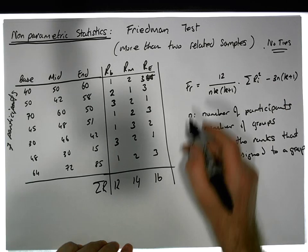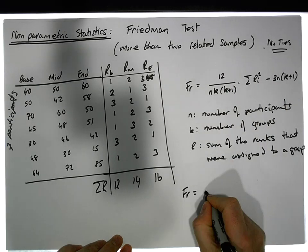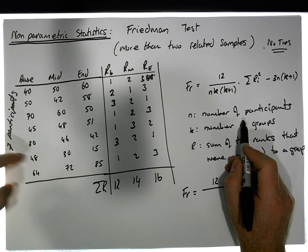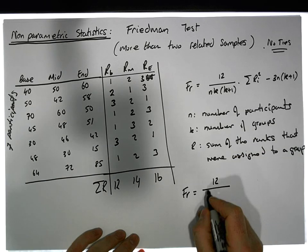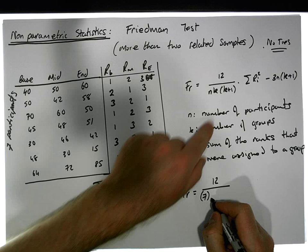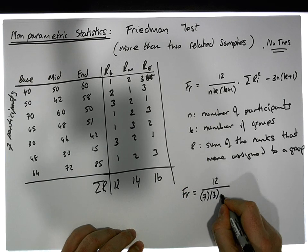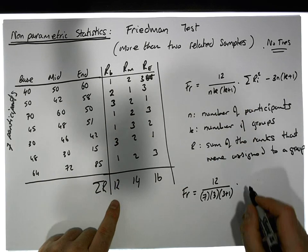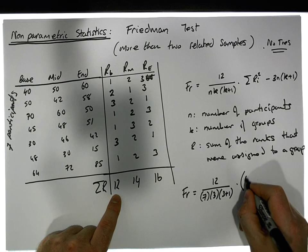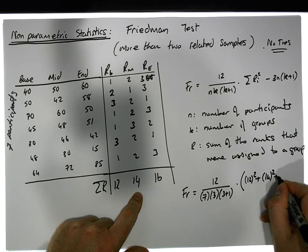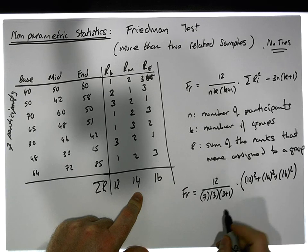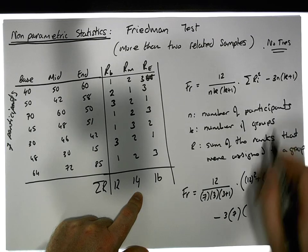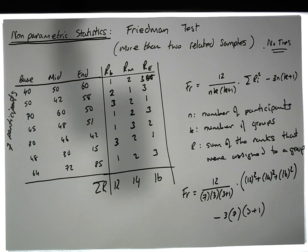Now we're in a position to calculate our Friedman test statistic. We have Fr equals 12 divided by how many participants - we've got one, two, three, four, five, six, seven sets of tuples, so there's seven participants - times how many groups - we have three groups - times three plus one. That needs to be multiplied by the sum of the squared ranks. So it's 12 squared plus 14 squared plus 16 squared, and we need to reduce that by three times the number of participants, which is three times seven, times the number of groups, which is three plus one.